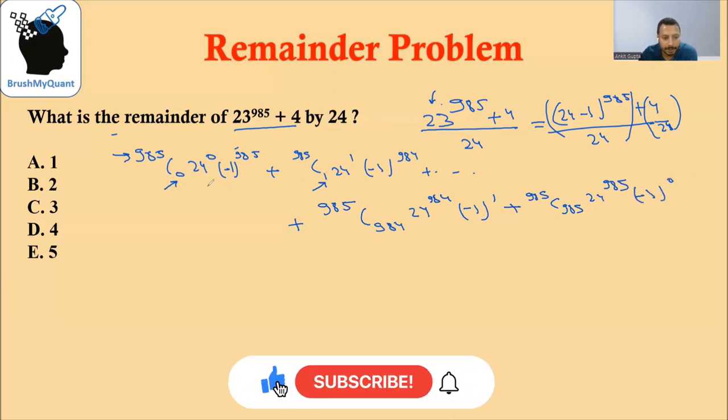The base kept increasing from 0, 1, it became 984 and eventually 985. Power of 24 starts with 0, keeps increasing till it becomes 985. Power of minus 1 starts with 985, keeps decreasing till it becomes 0.